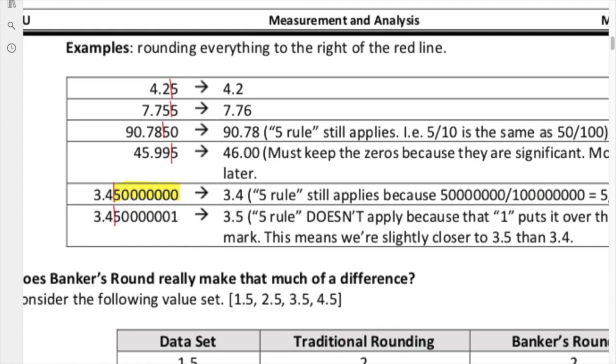But what happens if we add a 1? If we add a 1 to the end, this is no longer halfway. This 1 just pushes us past that halfway mark. And as a result, that means we are actually closer to the 5 as opposed to the 4. That's why this we round up to turn into a 5, because that last digit there determines that we are just slightly past the halfway point. And as a result, we have to round up.